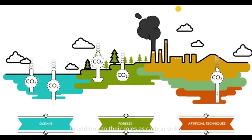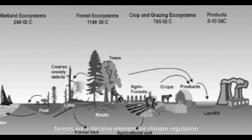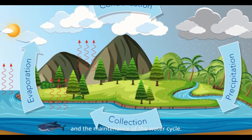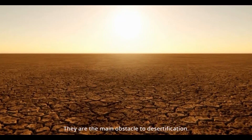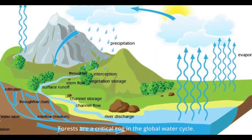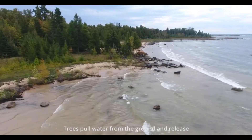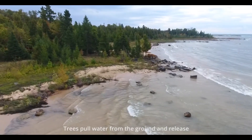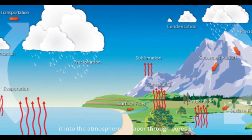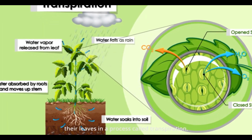In addition to their roles as carbon sinks, forests are a decisive element for climate regulation and the maintenance of the water cycle. They are the main obstacle to desertification. Forests are a critical cog in the global water cycle. Trees pull water from the ground and release it into the atmosphere as vapor through pores in their leaves in a process called transpiration.